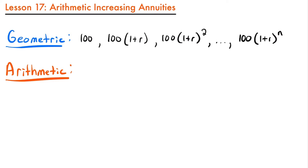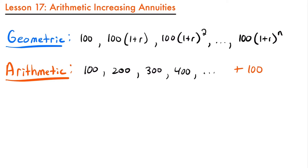For an example of an increasing arithmetic annuity, let's say we started with a payment of 100, then increased it by 100 for the next period, so our next payment would be 200, then 300, then 400, and this would go on until our last payment. For each payment we are adding $100. This is an example of payments forming an arithmetic progression — they are increasing by the same amount each time.